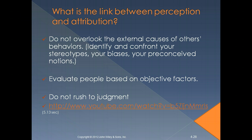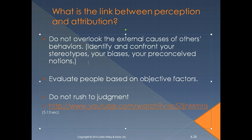Regarding the link between perception and attribution: do not overlook the external causes of others' behaviors. Identify and confront your stereotypes, biases, and preconceived notions so you have a clearer lens to look through. You want to be objective and not judge quickly when it comes to others. Be open-minded and clear-thinking about the current facts and situations; sometimes you have to cut out those perceived shortcuts your mind wants to add from schemas or past events and take everything from a fresh angle to be fair.